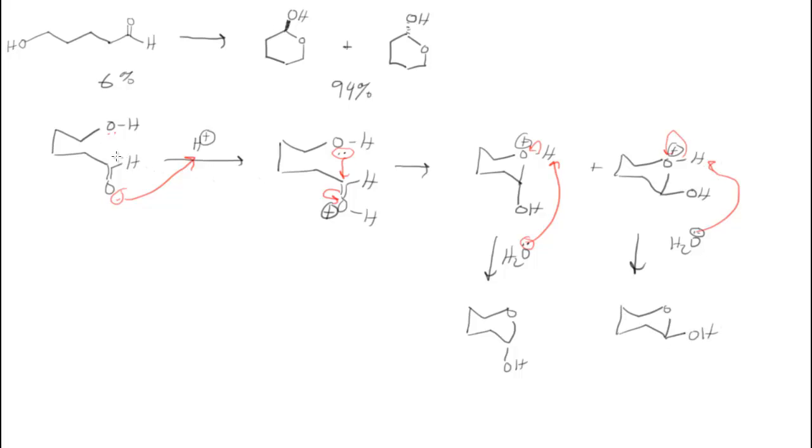Now this carbon here of the aldehyde, I'll circle it all the way through, gets a special name because it's going to form a new stereocenter in a series of different reactions with sugars. And so this carbon is called the anomeric carbon. And it's going to be the new stereocenter that's going to form in cyclic sugars.